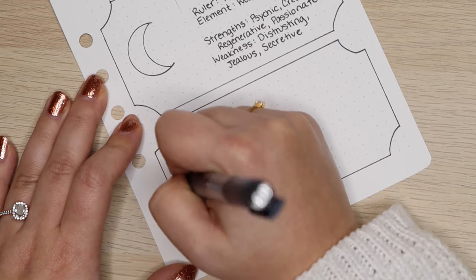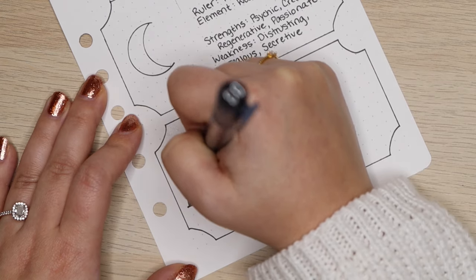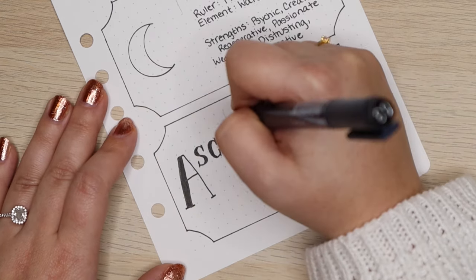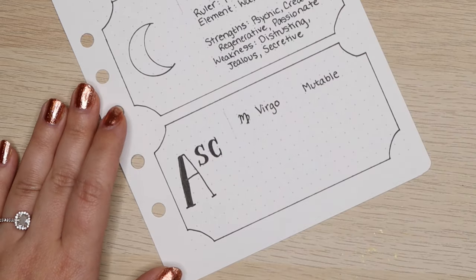The moon sign is what's behind your identity. It's kind of like what you keep hidden. It's your deepest desires, it's your emotions, but understanding your moon sign can give you insight on how to nurture yourself.